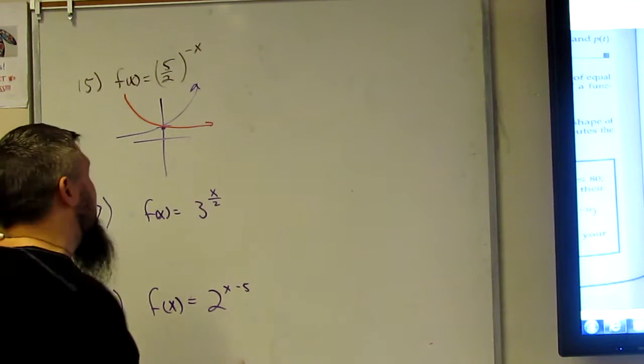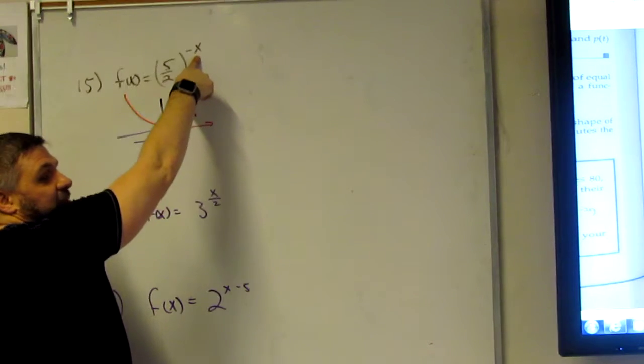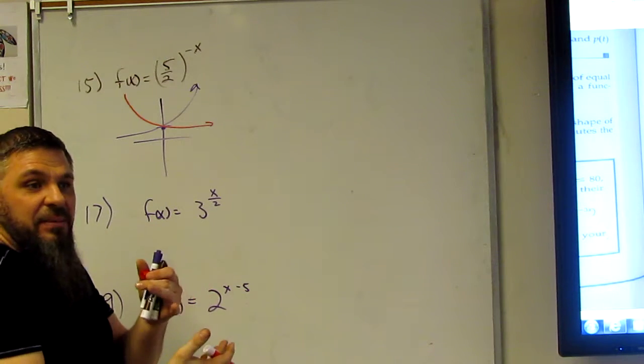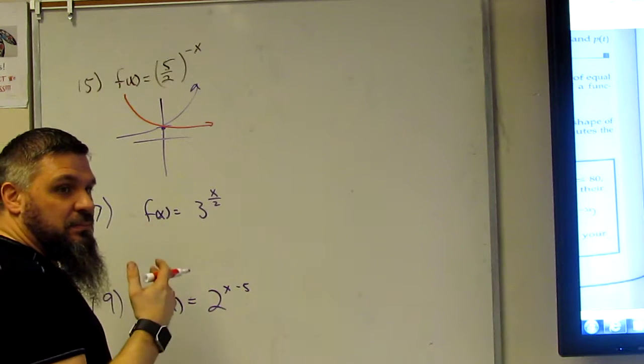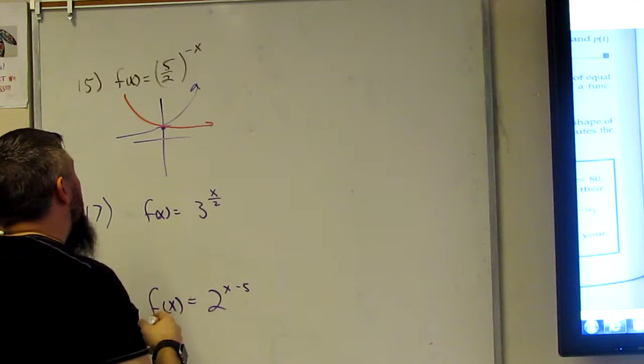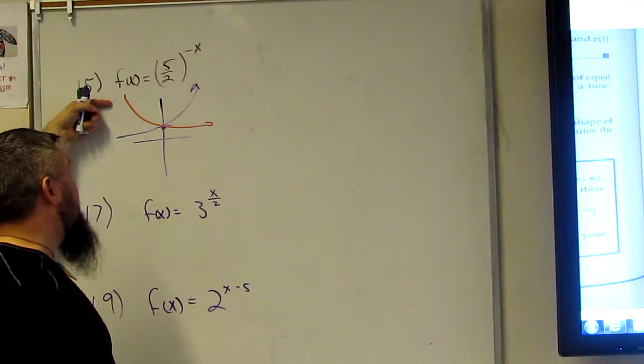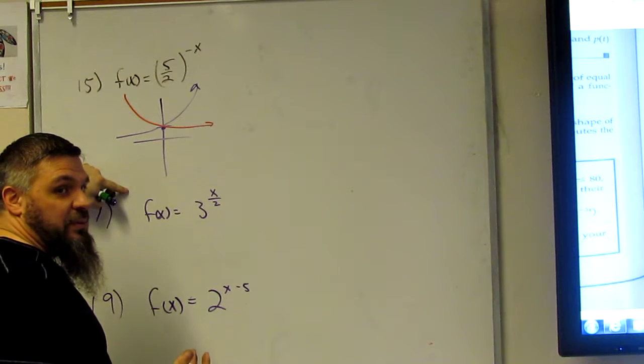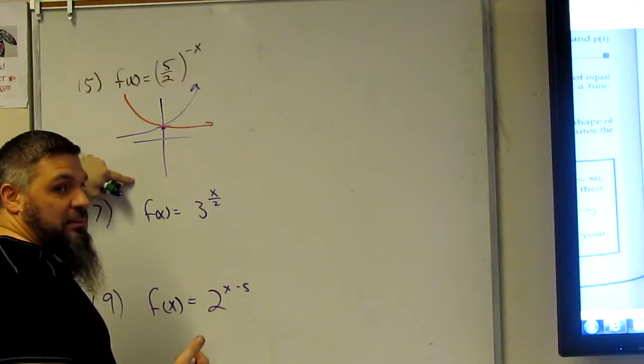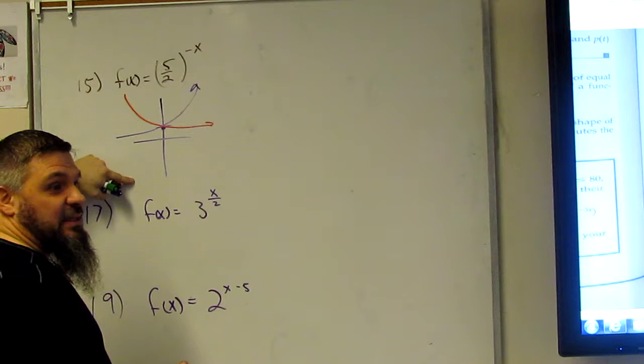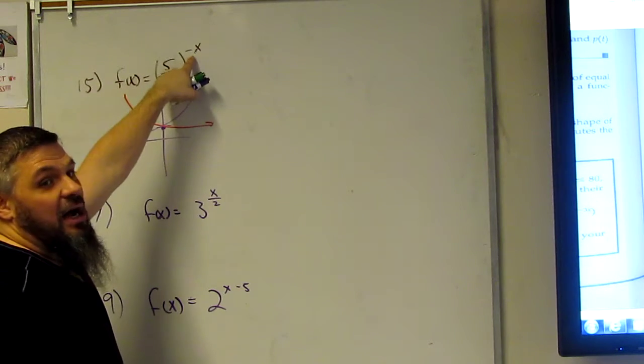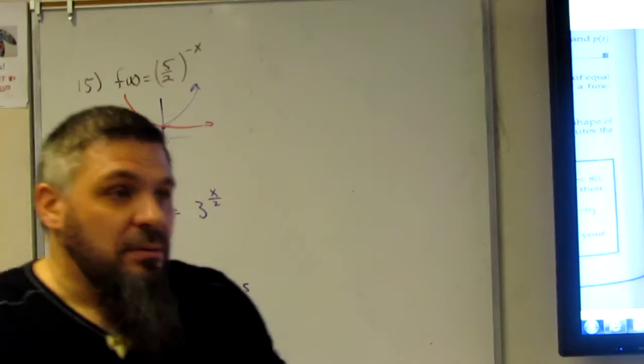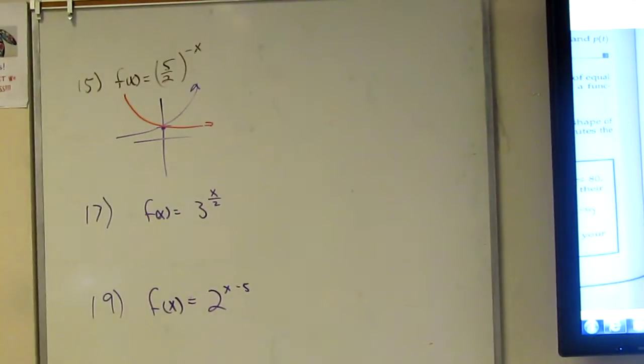Because what it does is it just flipped it across the y-axis. Because the x-axis became opposite. So if the whole function were opposite, then this thing would flip across the x-axis. If the y were negative, the whole thing would be across the x-axis. But because the x is opposite, it's going to cross across the y-axis.